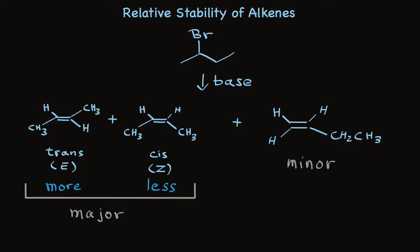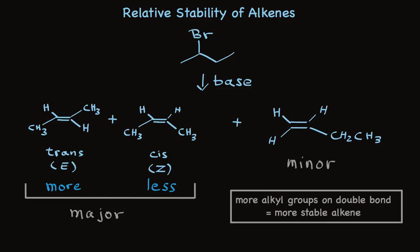Replacing hydrogens by alkyl groups makes alkenes more stable. So it's a general rule. More alkyl groups on the double bond means the alkene is more stable. But, okay, why? To understand this, we have to look closely at the orbitals that are used for bonding.